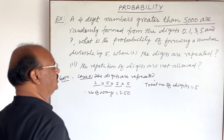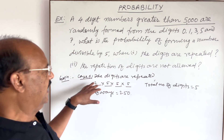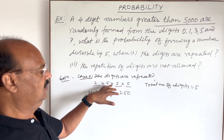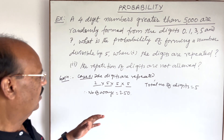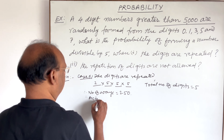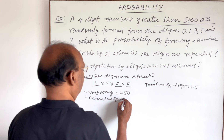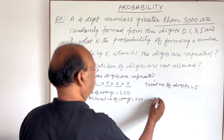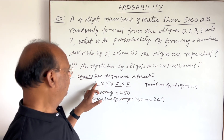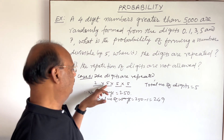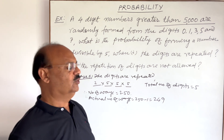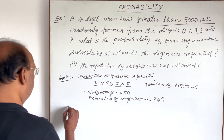However, the case where 5 is in the thousands place and 0 is in the other three places gives exactly 5000, which is not greater than 5000, so that must be subtracted. Therefore, the actual n(S) is 250 minus 1 equals 249. We subtract this one because the number 5000 itself must be omitted since the number should be strictly greater than 5000.